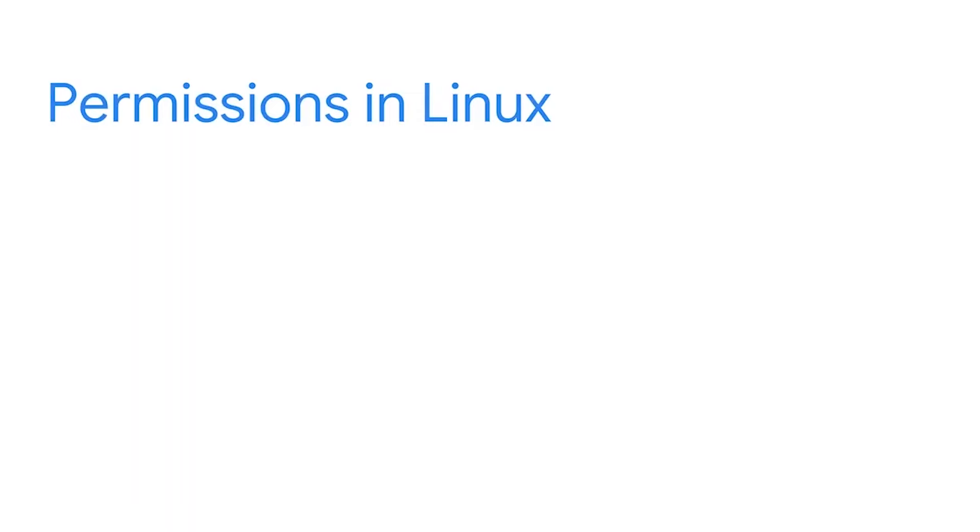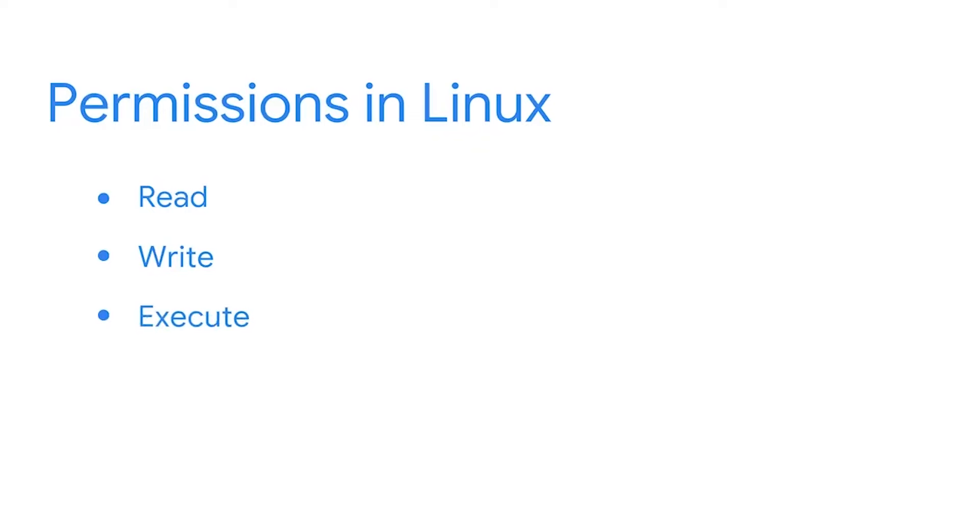There are three types of permissions in Linux that an authorized user can have. The first type is read. On a file, read permissions means the contents of the file can be read. On a directory, this permission means you can read all files in that directory. Next are write permissions. Write permissions on a file allow modifications of the file's contents. On a directory, write permissions indicate that new files can be created in that directory. Finally, there are also execute permissions. Execute permissions on files mean the file can be executed if it's an executable file. Execute permissions on directories allow users to enter into a directory and access its files.